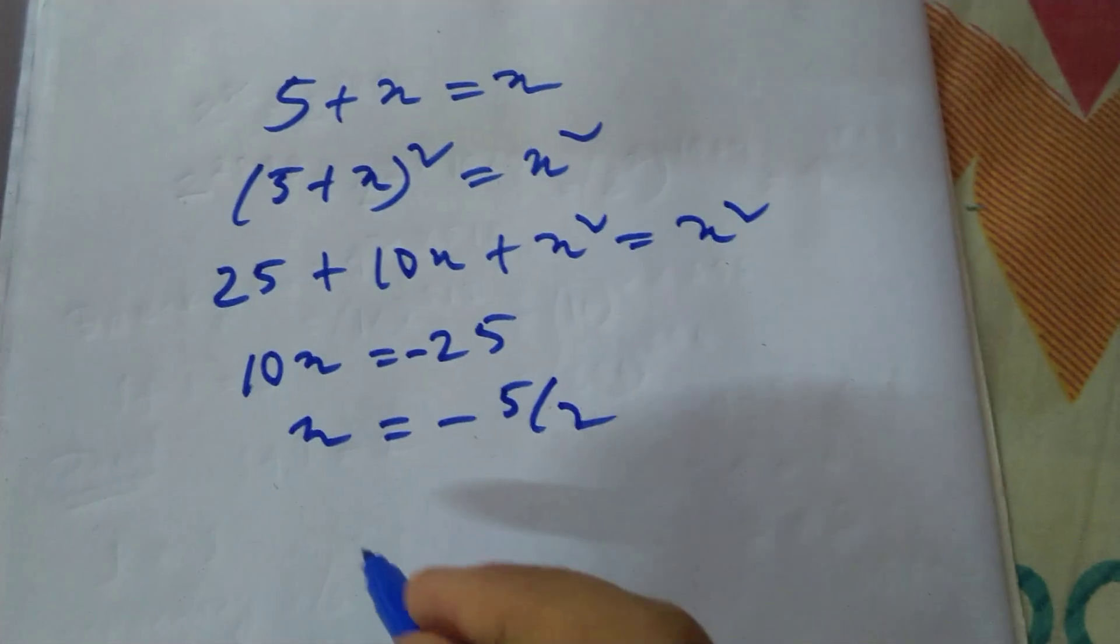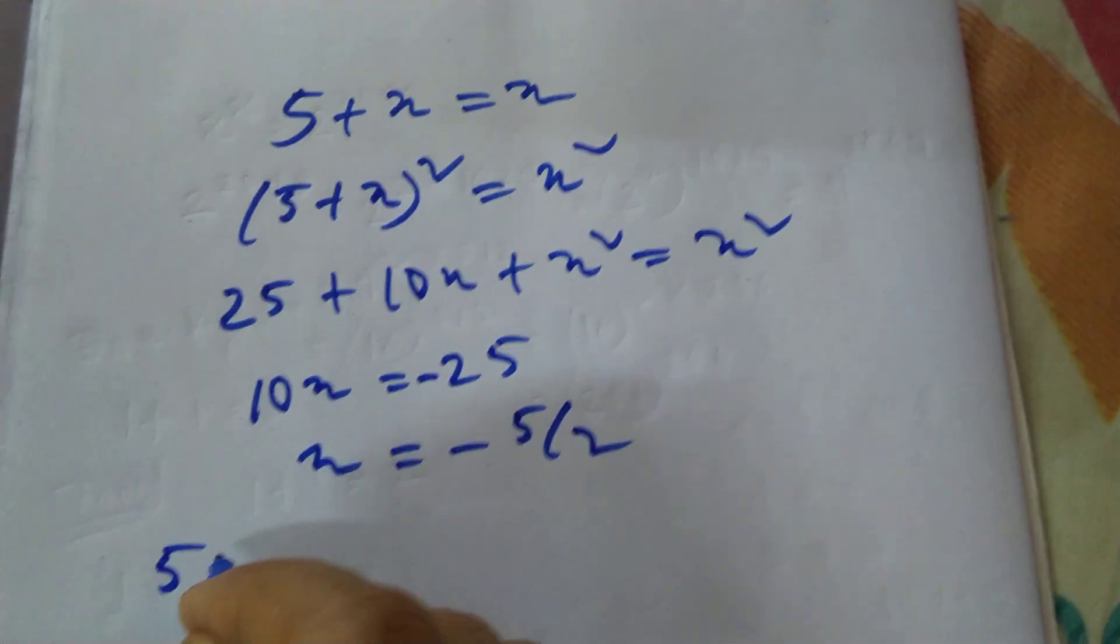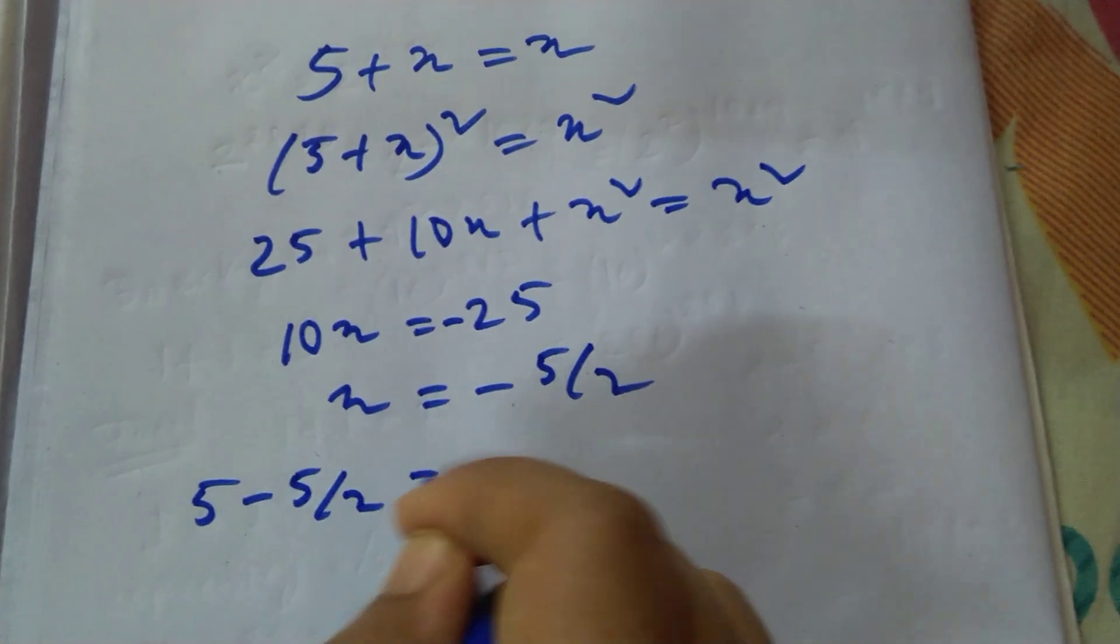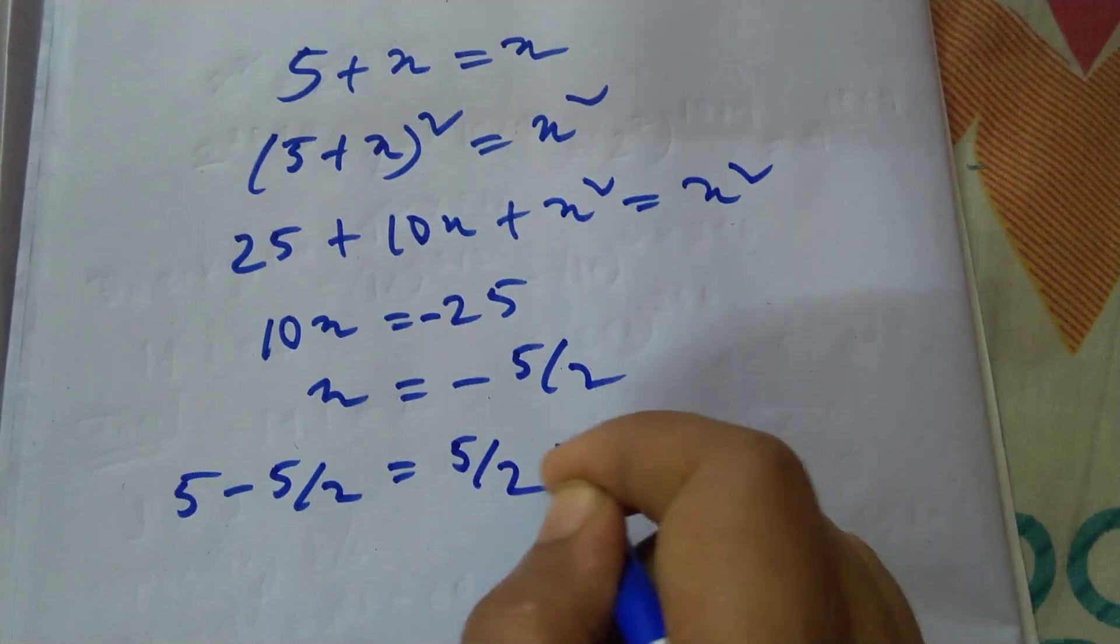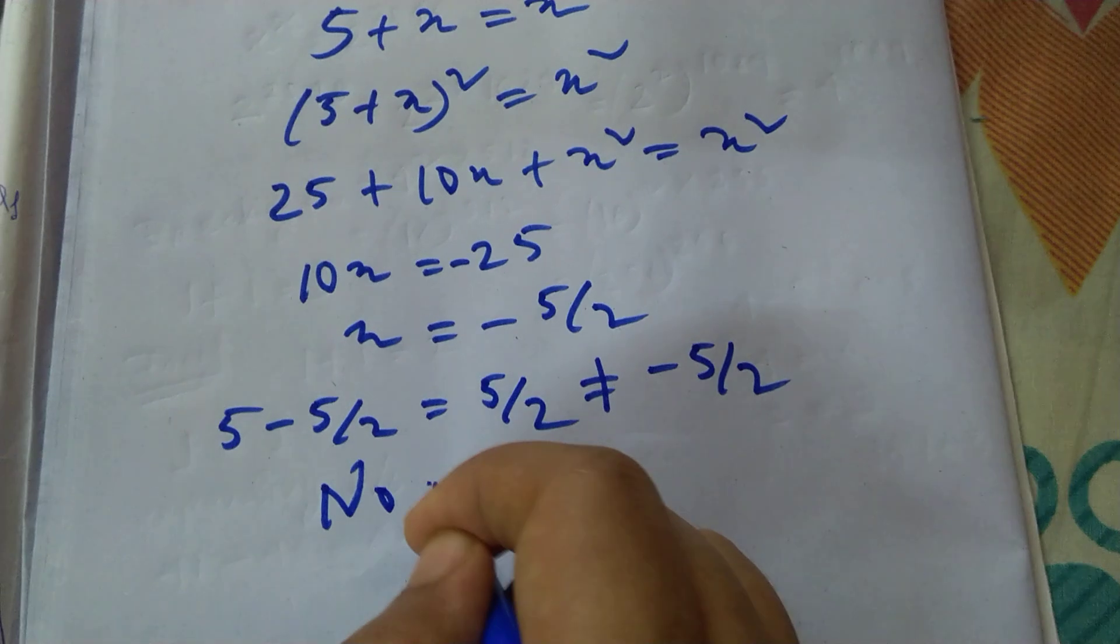Now putting this value in here, so 5 - 5/2 = 5/2, which does not equal -5/2. So no real solution.